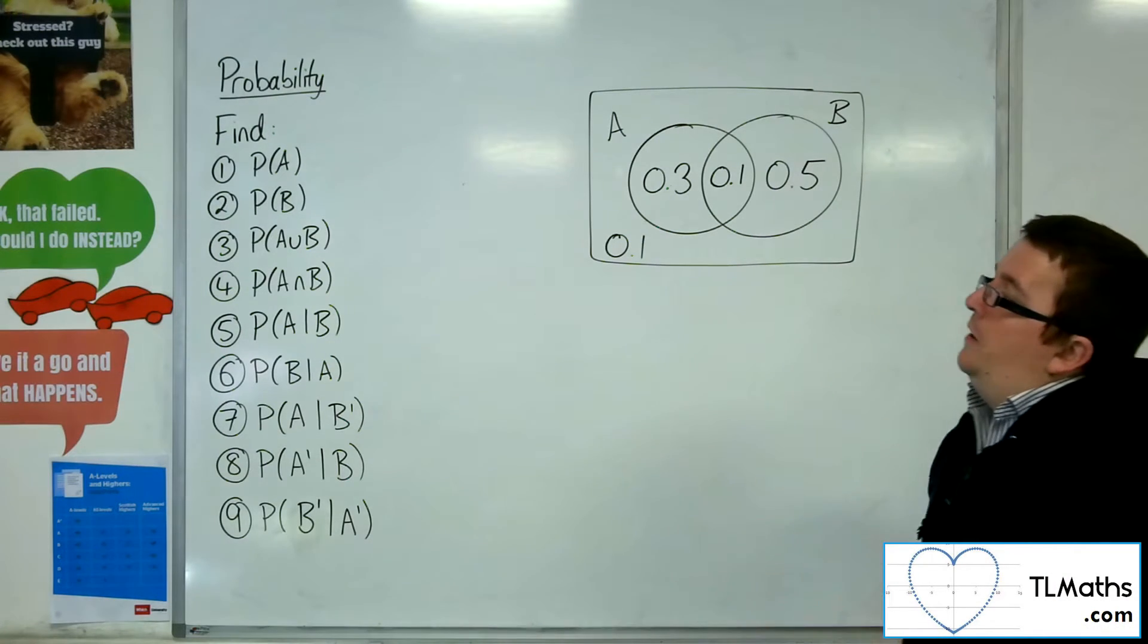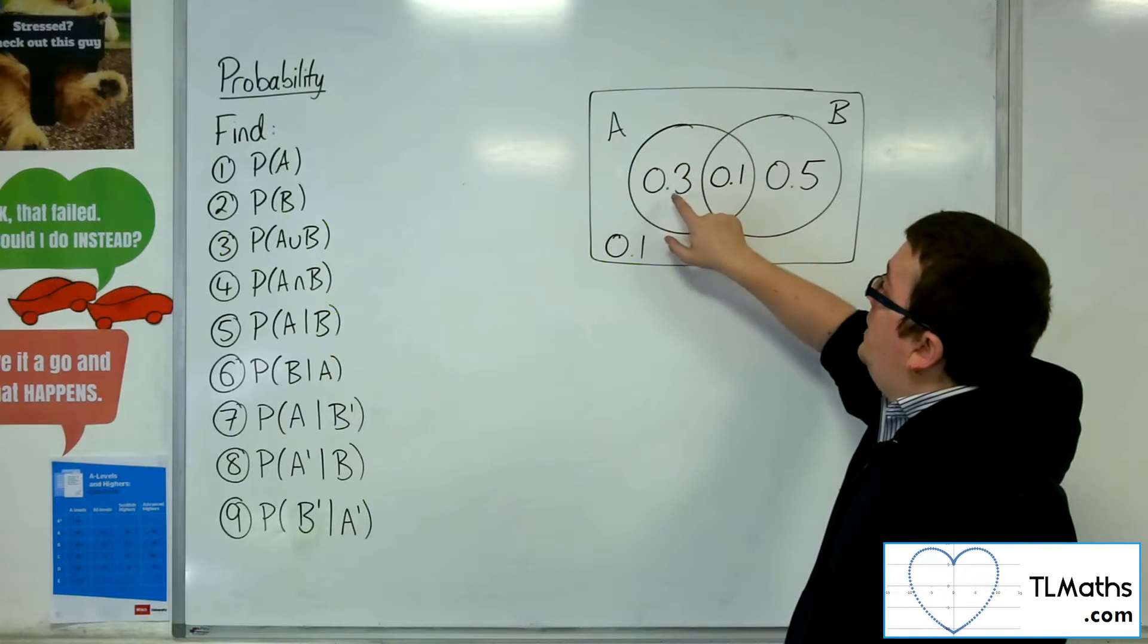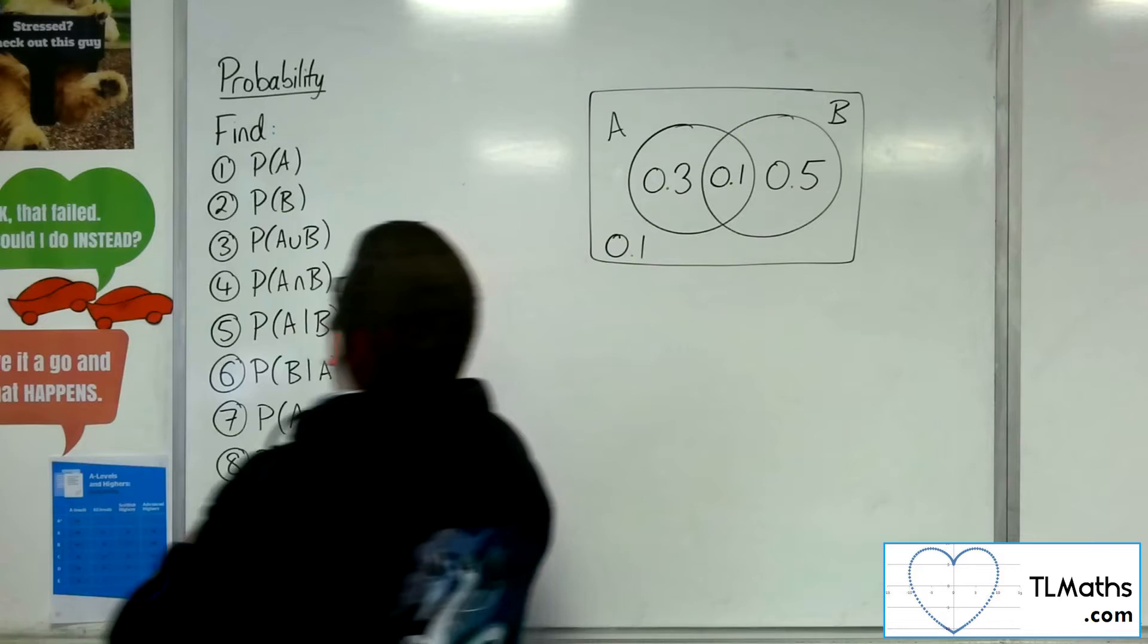So for the first one, we need the probability of A. Well, that's whatever is within the circle of A, so 0.3 plus 0.1, so 0.4.